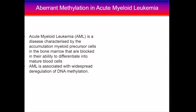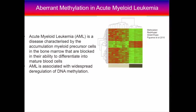First a little bit of background on the disease. As many of you might be aware, acute myeloid leukemia is a disease characterized by accumulation of myeloid precursor cells in the bone marrow that are blocked in their ability to differentiate into mature blood cells. And like many other cancers, AML is associated with widespread deregulation of DNA methylation. Some work done early in 2010 comparing leukemic blasts to normal CD34 cells showed both regions of aberrant hypermethylation in the red here as well as hypomethylation.